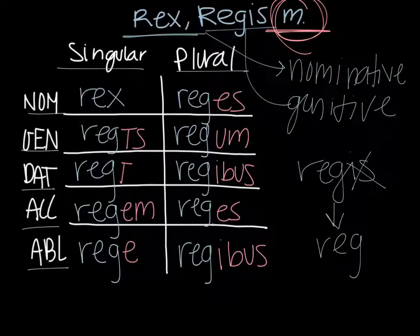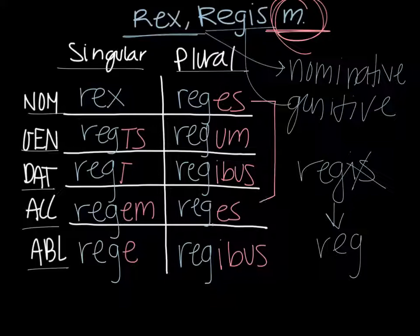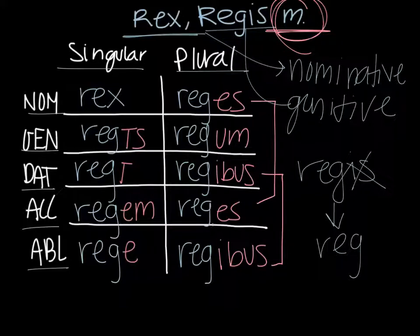Again these endings are going to change the meaning of the word and how they appear in a sentence. It's important to also note that the endings for nominative and accusative plural are the same and the dative and ablative plural are the same. So keep this in mind when you're translating so you know that these words could have two different meanings in the sentence.